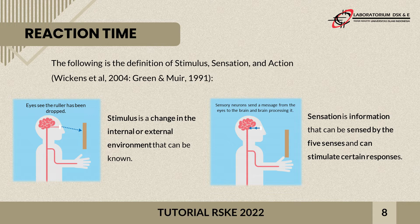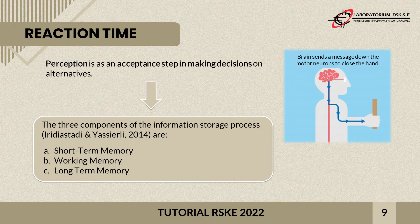Sensation is the process of receiving a stimulus by the five senses and passing it on to the information center. For example, if we are pinched, it continues to hurt — that means the sensation is pain. From this example, we know that the pinch received by the skin is continuously transmitted to the brain as pain.